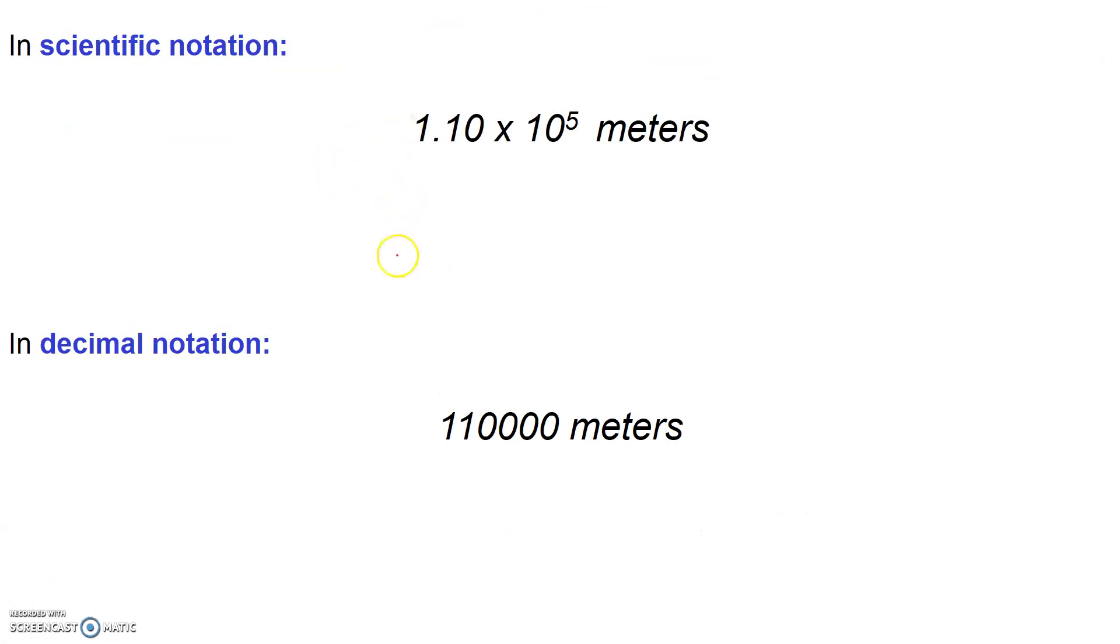In scientific notation, we always write numbers with two parts. There's a term at the front that always just has one digit to the left of the decimal point, and that's referred to as the coefficient. And then what we do to the coefficient is we multiply it by a power of 10. And the exponent here, the power of 10, that's called the exponent, and the whole power of 10 itself is referred to as the exponential term. So key points here is we have an exponential term, which is the power of 10, and that's going to be multiplied by a coefficient that has just one digit to the left of the decimal point.